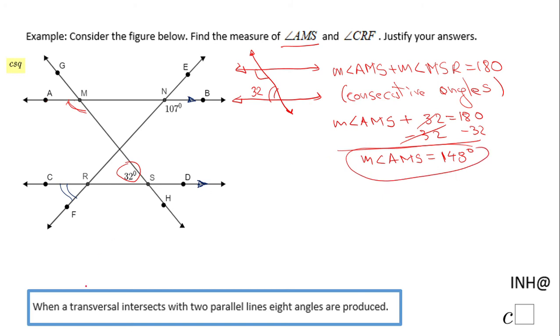Now let's move to the second angle that we need to find, CRF. You notice this angle is formed by the two parallel lines AB and CD and this transversal. So let me make a simpler picture.